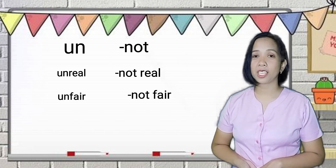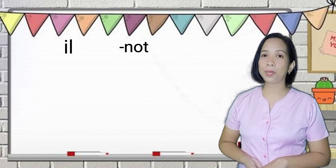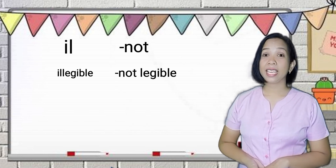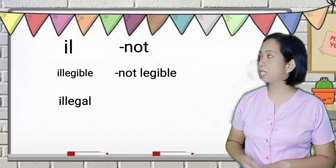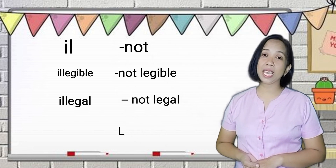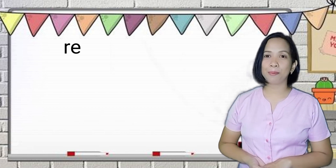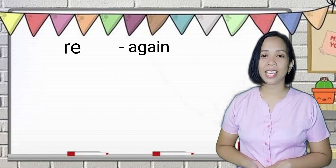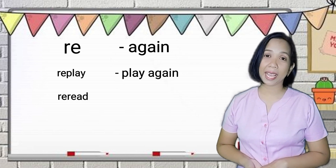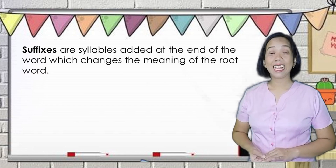Another prefix is ill, which also means not. For example, illegible, which means not legible; illegal, which means not legal. We often add ill to a word that begins with the letter L. And lastly, we have re, which means again. For example, replay, which means play again; reread, which means read again.